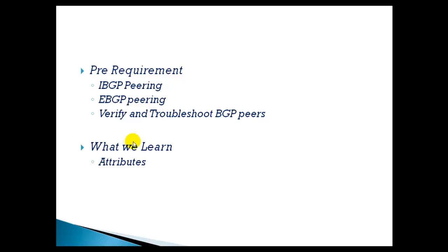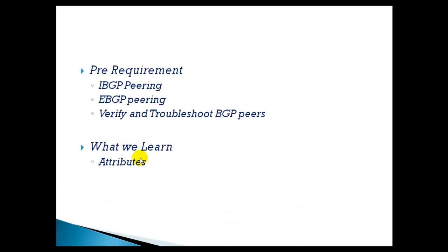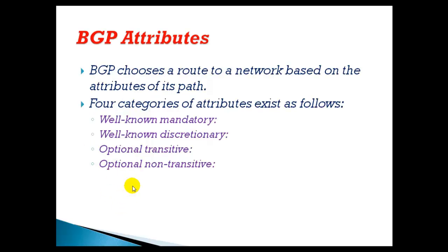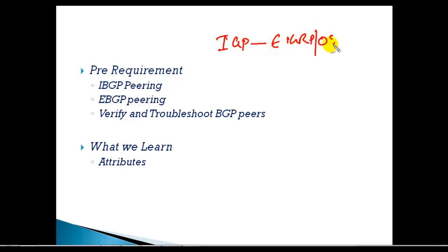What exactly we learn in the BGP path selection process — the first step is to understand attributes, which we call BGP attributes. Just like we have different kinds of protocols used in IGP, we have seen different protocols like EIGRP, OSPF, and RIP.